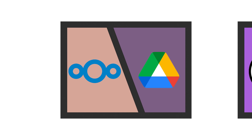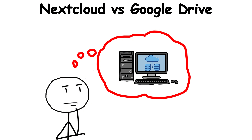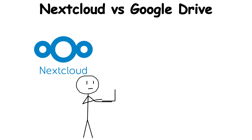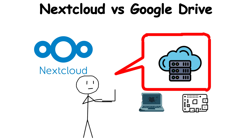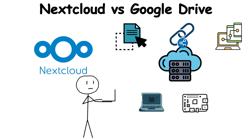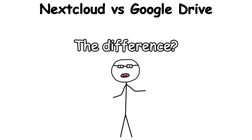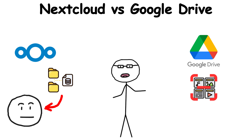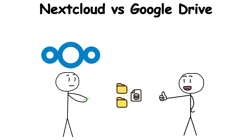Nextcloud vs. Google Drive: Most people don't realize you can run your own Google Drive at home. Nextcloud lets you spin up a personal cloud server on a cheap PC or even a Raspberry Pi — drag in files, share links, sync across devices. It works just like Google Drive. The difference? Your data stays with you. Google scans files to improve services and feed its ecosystem. Nextcloud never touches your stuff.